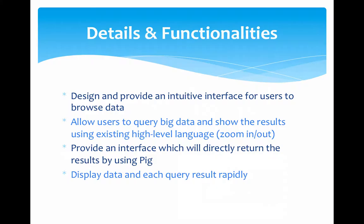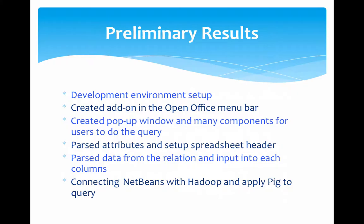For the details and functionalities of our project, we have four major functionalities. We design and provide a very intuitive interface for users to browse data and we allow users to query big data and show results using existing high-level languages. We also do zoom-in and zoom-out aggregations, provide an interface that directly returns results using PIG, and display data and query results rapidly, updating data in a very short period of time.